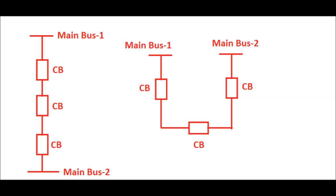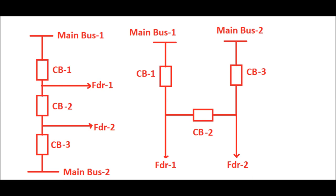So what does the one and half breaker system mean? It is basically in between two main buses — main bus 1 and main bus 2 — where three breakers are connected. There are two types of configuration: I-type configuration and D-type configuration. Feeder 1 and feeder 2 are connected in between main bus 1 and main bus 2 for both configurations.